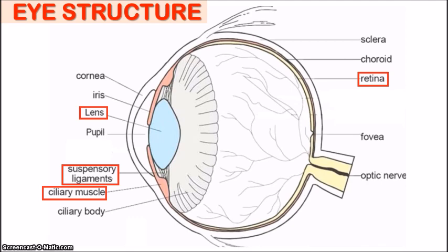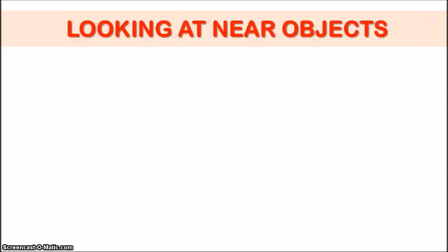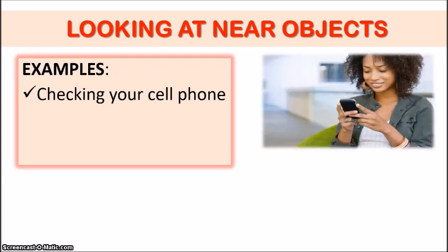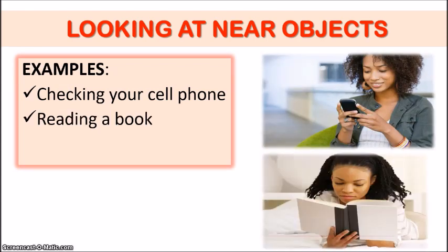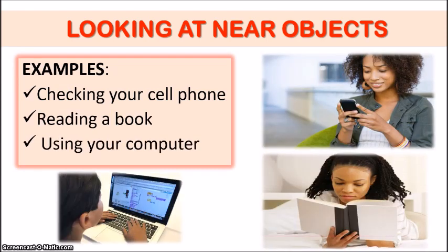Now remember the key structures to focus on in accommodation are the parts highlighted in the red boxes: the lens, the ciliary muscles, the suspensory ligaments and the retina. So let's begin with those situations when our eyes are looking at nearby objects — for instance, when we're checking your cell phone, when we're reading a book or using your computer.